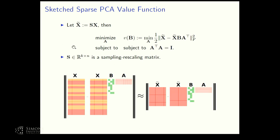This leads to the sketched sparse PCA problem. We sketch the input matrix X using a sampling and rescaling matrix — selecting some rows or forming linear combinations of rows to get X̃. This is a much smaller problem which we can efficiently solve.